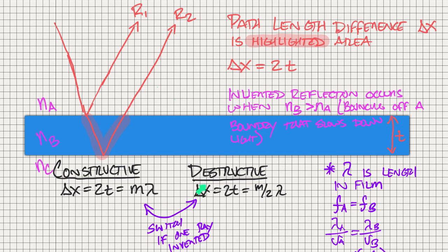These characteristics are going to change if one of the rays is inverted, and only one. If they are both inverted, it acts as if neither of them are inverted.